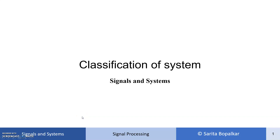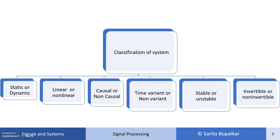Hello and welcome. In this video, we are discussing classification of systems for both continuous time and discrete time. Systems are classified as static or dynamic, linear or non-linear, causal or non-causal, time-variant or time-invariant, stable or unstable, and invertible or non-invertible.